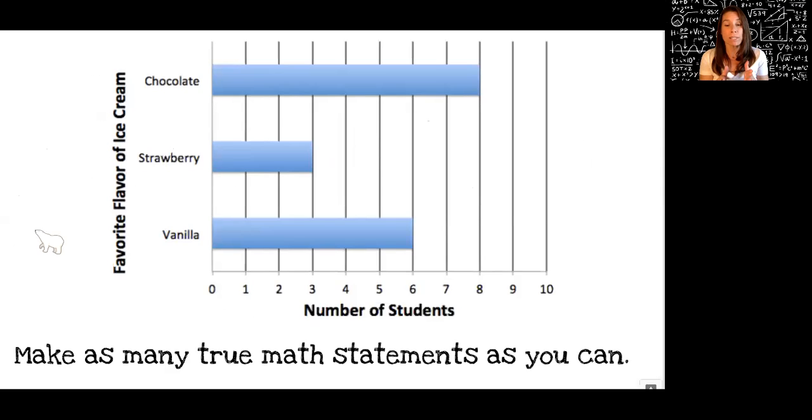Okay, so you're going to stay in that story section where it says math statements. You're going to make as many true math statements as you can about this picture. This says favorite flavor of ice cream. We've got chocolate, strawberry, vanilla. This down here says number of students. Zero, one, two, three, four, five, six, seven, eight, nine, ten. What kind of statements can you make about this picture? Make as many as you can.